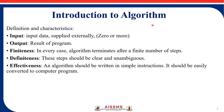Here we will see the definition and characteristics of an algorithm. The characteristics are: input, output, finiteness, definiteness, and effectiveness. Input is nothing but the input data supplied externally — zero or more inputs. Output depends on the type of input, and is the result of the program — the goal of the algorithm.